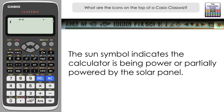The last symbol on the right is not available on the emulator and is only present on solar-powered models of the ClassWiz. It's a Sun icon indicating that the calculator is currently being powered or partially powered by the solar panel. Obviously that won't be present on a non-solar-powered model.